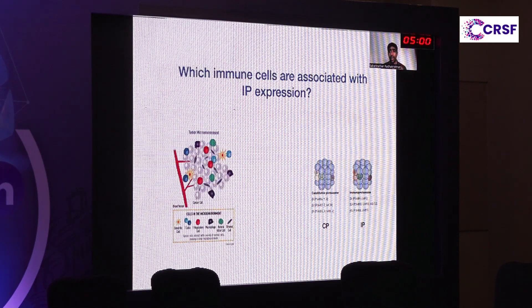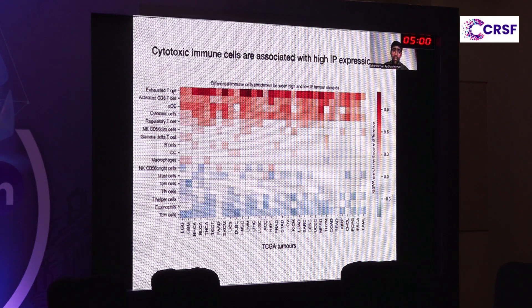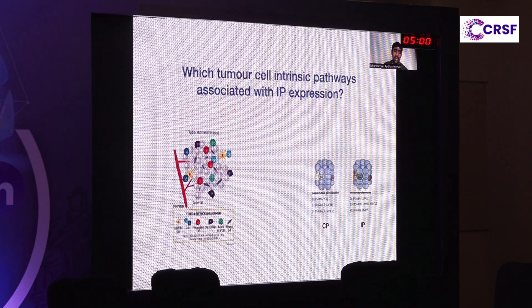We then asked whether high immunoproteasome expression is associated with a difference in immune cell enrichment. Using bulk RNA-seq data, we quantified the enrichment of different immune cells using gene-set enrichment analysis specific to different immune cell types. We found that tumors with high immunoproteasome expression have enrichment of activated CD8 cells, exhausted B cells, and activated dendritic cells, which collectively have a high cytotoxic effect compared to tumors with low immunoproteasome expression. This suggests that immunoproteasome expression can trigger cytotoxic immune cell infiltration across multiple solid tumors.